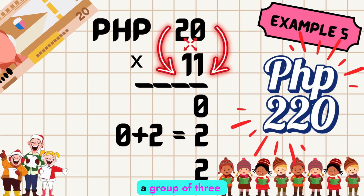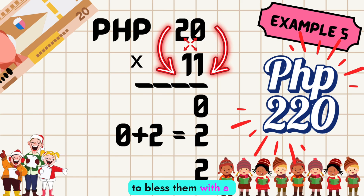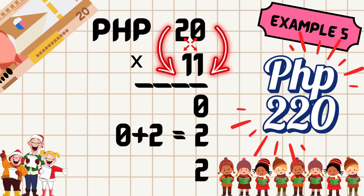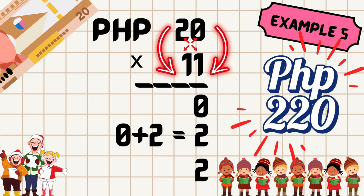Finally, on your way home, a group of street children started doing Christmas carols. They are 11 in total and you've decided to bless them with a 20,000 bill. Let's apply what we've learned: multiply 0 times 1, which equals 0. Write 0 as the last digit.